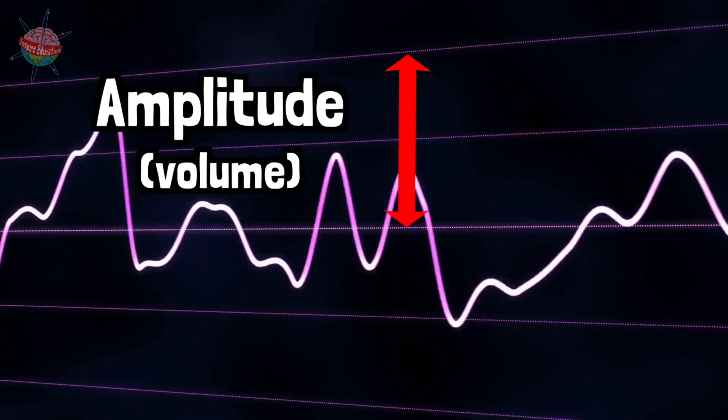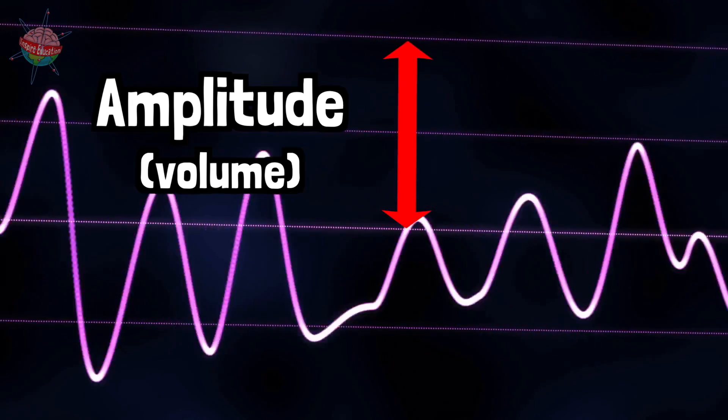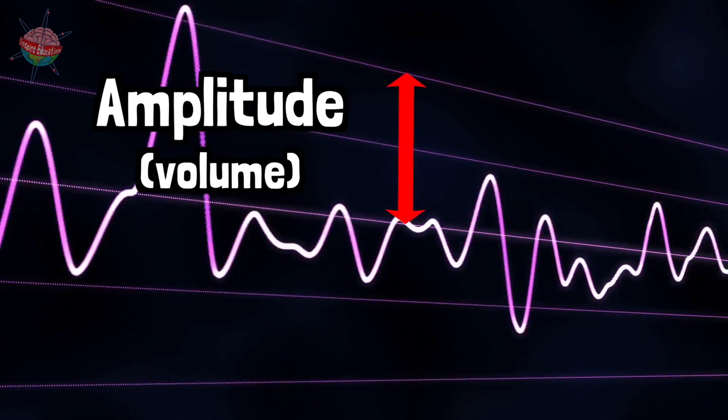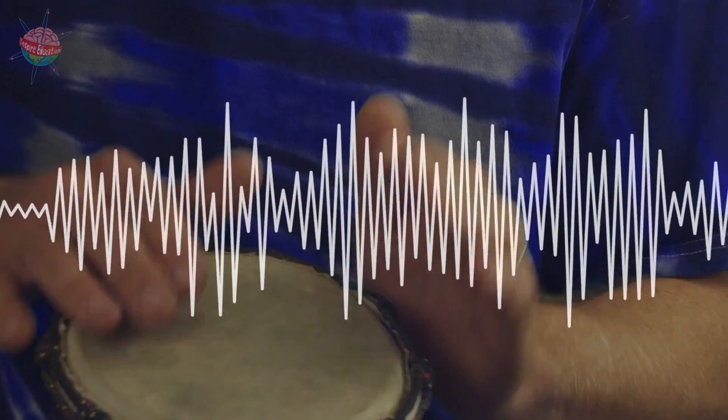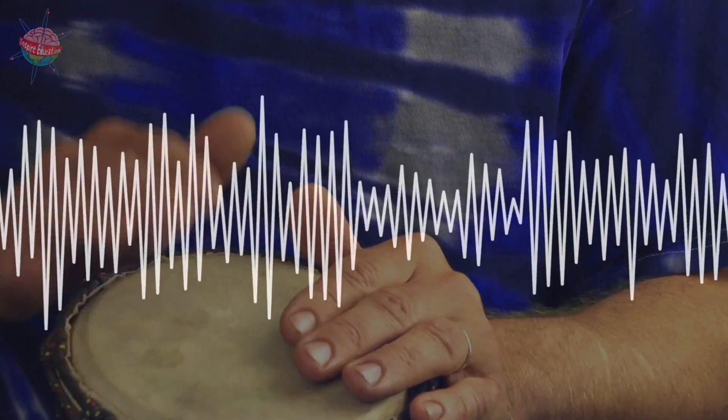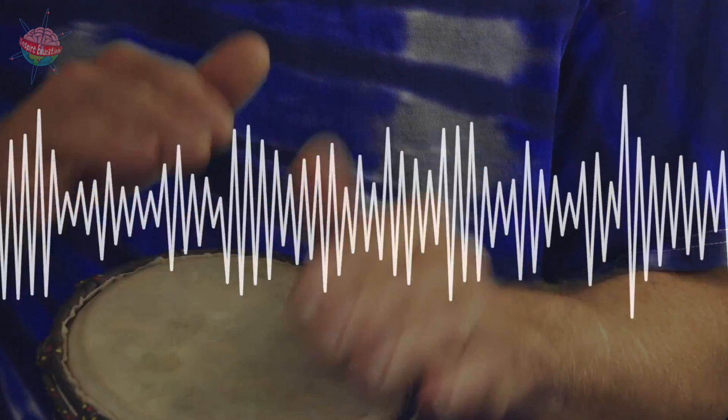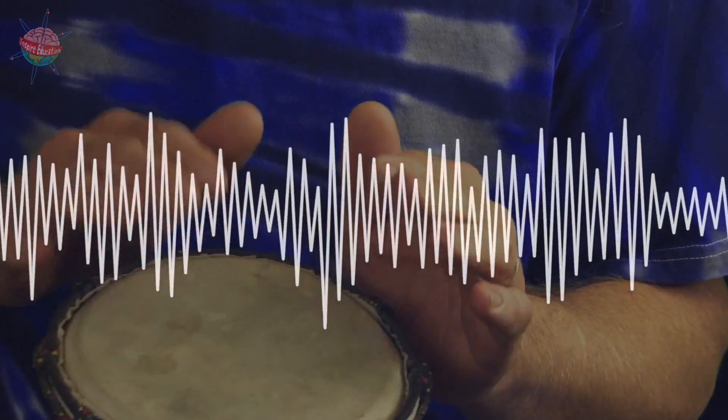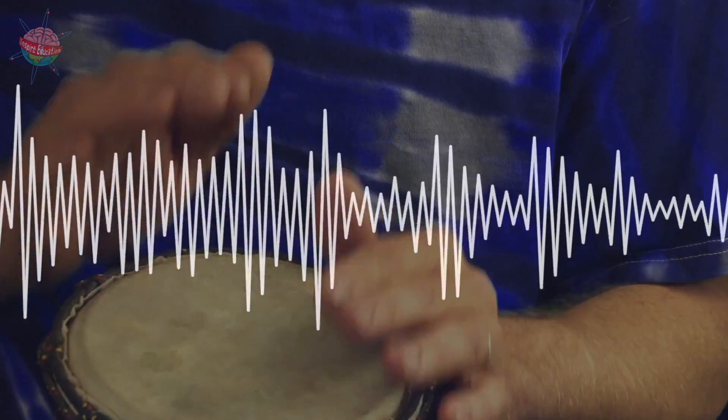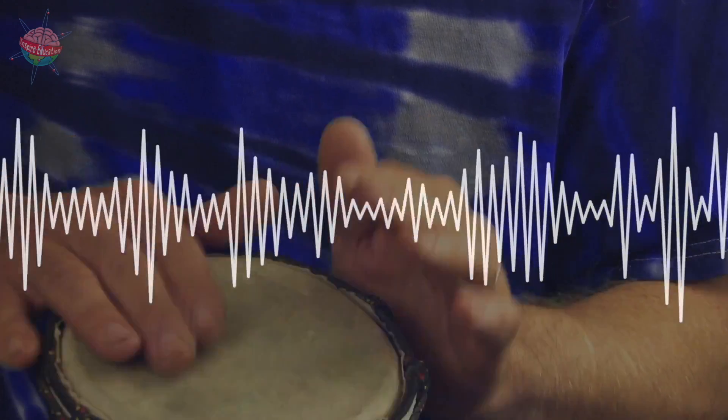The volume, or amplitude of sound, is also influenced by the energy of the vibrations. If you bang a drum gently, you only transfer a small amount of energy. It won't vibrate very much or for very long. The sound waves are small and the sound is soft.